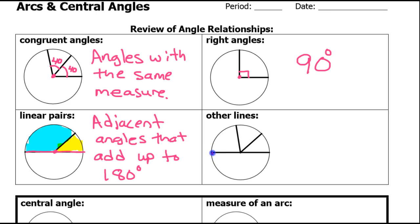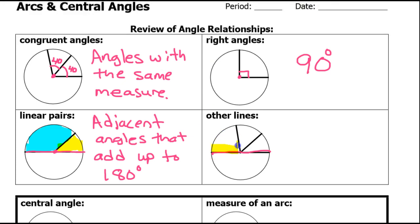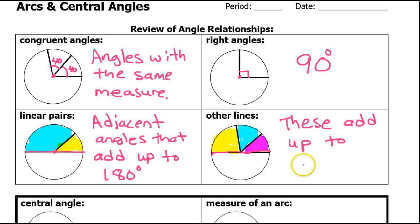Now, you cannot call this a linear pair because there are three angles here. However, you could probably guess that these three angles still add up to 180 degrees — that's still something you need to keep in mind. These will add up to 180 degrees because together they make up half of a circle. So whenever you see a straight line like this, think: those angles will all add up to 180 degrees.